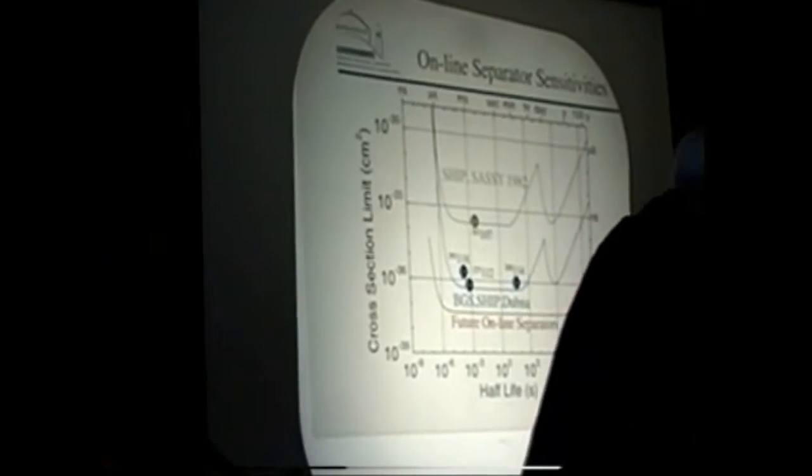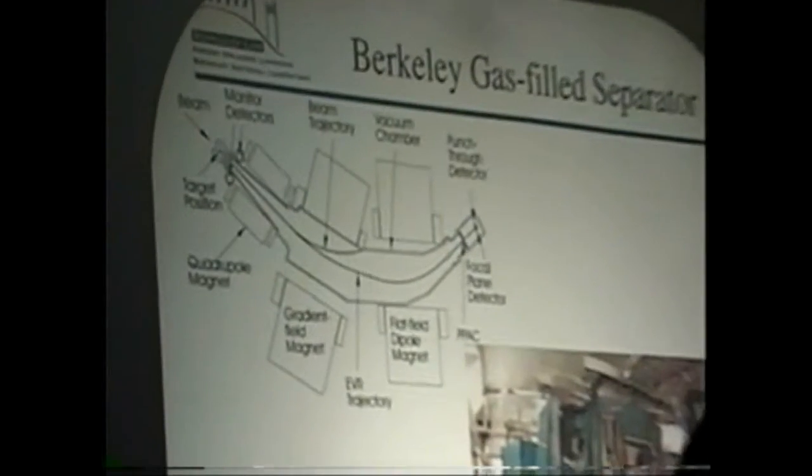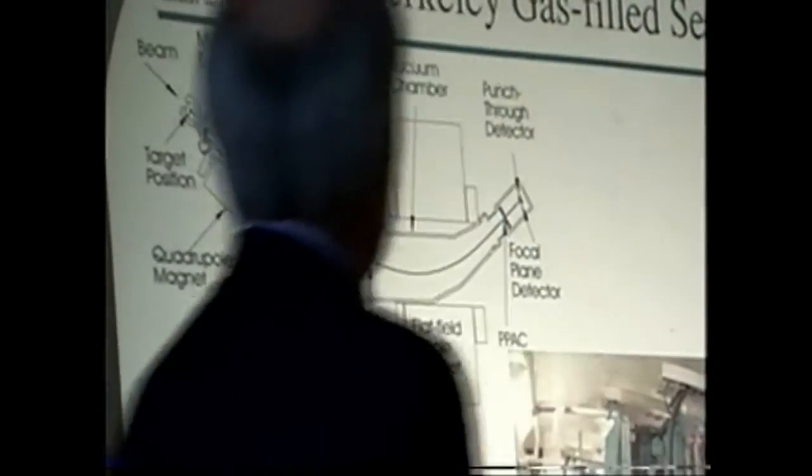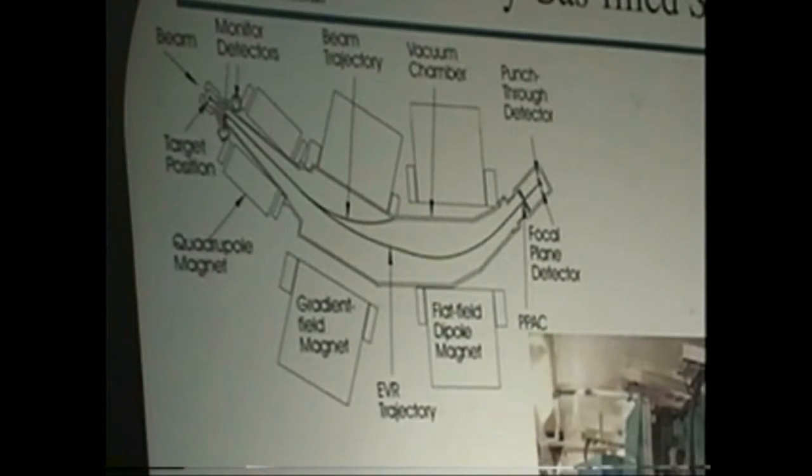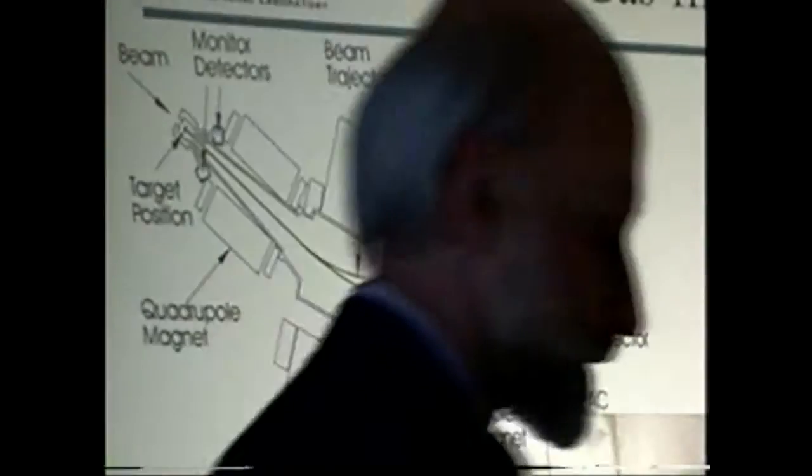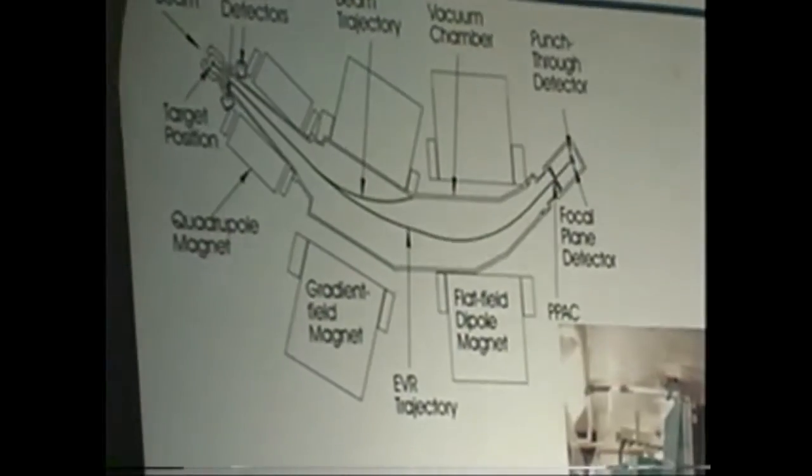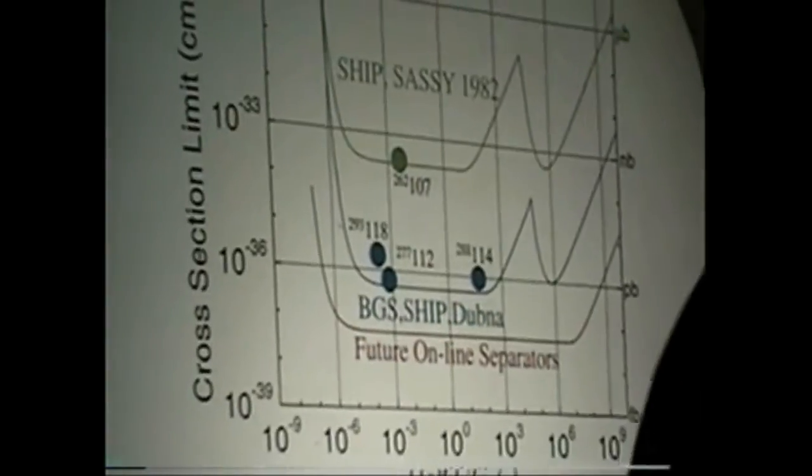One more dot on there is the element 118 experiment we did with the BGS at Berkeley. This is the little picture we've kind of redone the gas-filled separator, built a larger acceptance device with a larger angle that gives better separation and reduction of background. And so that's the state of the art right now for separators.